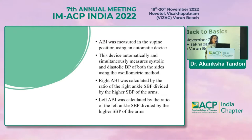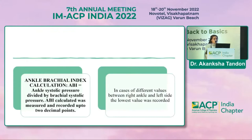ABI was measured in the supine position using an automatic portable device, which simultaneously measured systolic and diastolic blood pressure of both right and left sides using the oscillometric method. Right ABI was calculated as the ratio of right ankle systolic blood pressure divided by the higher systolic blood pressure of the arms. Likewise, left ABI was calculated as the ratio of left ankle SBP divided by the higher SBP of the arms. In cases of different values between the right and left side, the lower value was included, calculated to two decimal points.